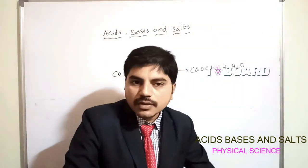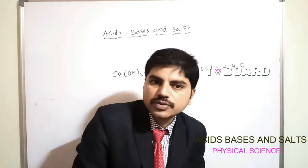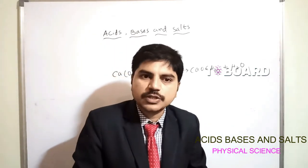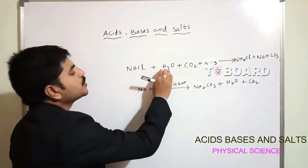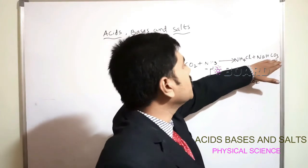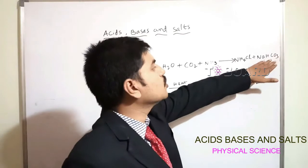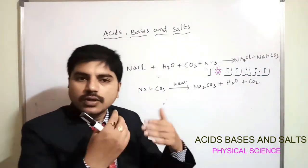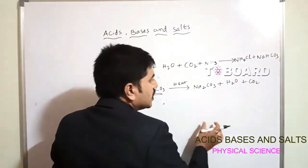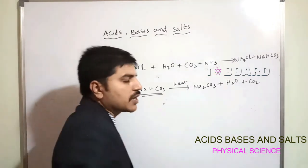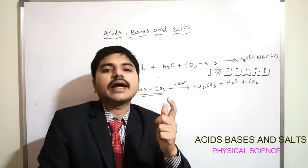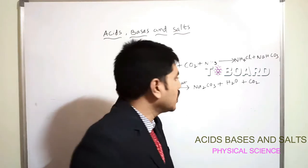Baking soda is used in food to make it puffy and smooth. The preparation: NaCl + H₂O + CO₂ + NH₃ → NH₄Cl + NaHCO₃. Sodium hydrogen carbonate NaHCO₃ is baking soda. When heated, baking soda decomposes: 2NaHCO₃ → Na₂CO₃ + H₂O + CO₂. Baking soda is also a mild antiseptic and non-corrosive.